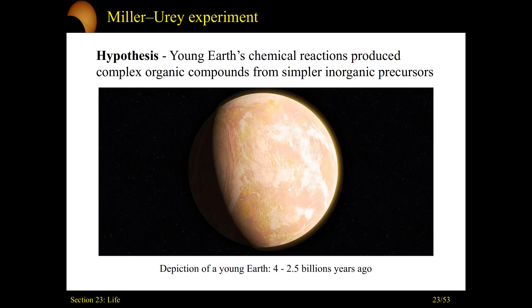One model under this abiogenesis idea is the famous Miller-Urey experiment. It starts with a simple hypothesis: Earth had a lot of simple inorganic precursors, and the young Earth's reactions just built up complex organic compounds. We're looking here at a picture of a young Earth somewhere between four and two and a half billion years ago, where it has this kind of orange tinge — oxygen hasn't yet flooded into the atmosphere from life. So the idea is: take the material just present at this young early Earth, and see what happens.